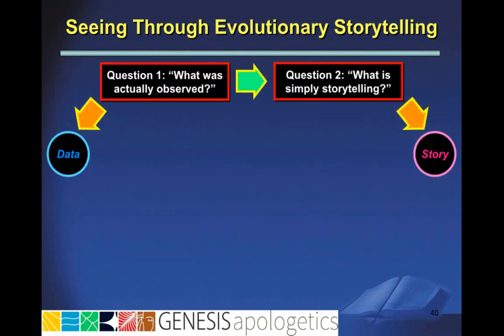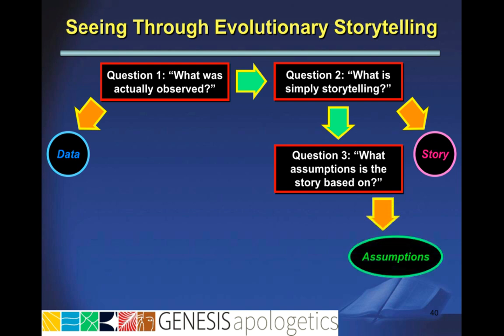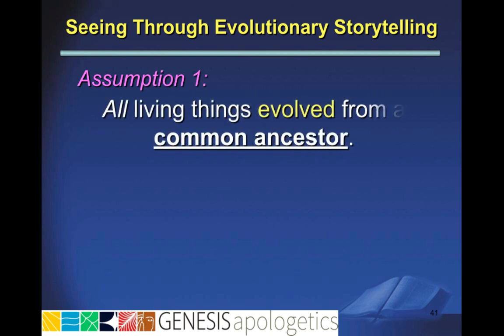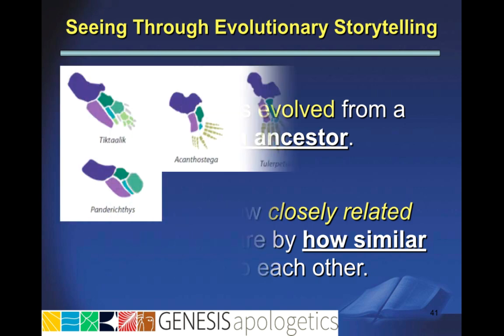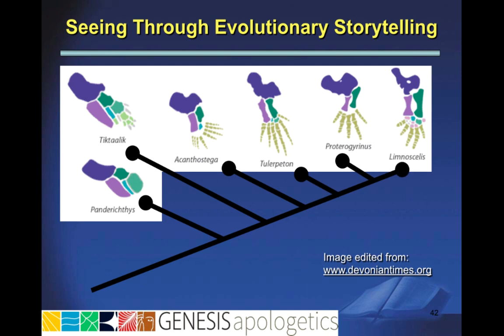The next question we want to ask is: what assumptions is the story based on? This enables us to determine what the unproven assumptions are behind the story. The first assumption is that all living things evolved from a common ancestor. The second assumption is that we can tell how closely related two organisms are by how similar they are to each other. In this example, we see evolutionists compare the bones of lobe-finned fish like Panderichthys and Tiktaalik to the bones found in the forelimbs of tetrapods and declare that they are all related.